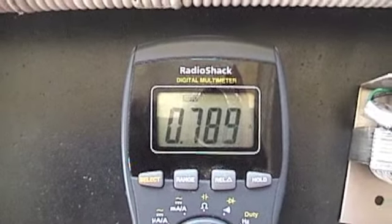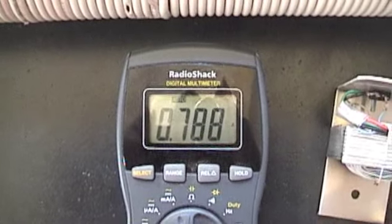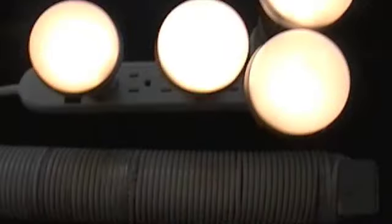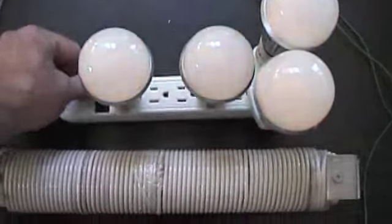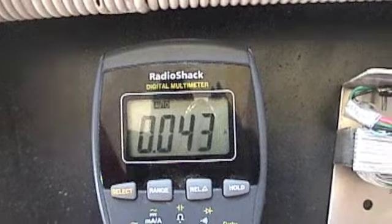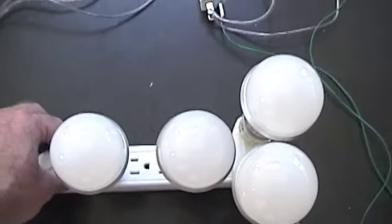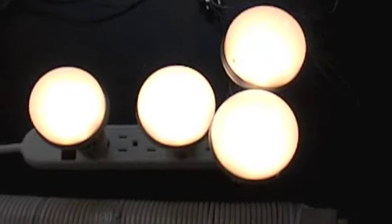So we're pulling 790 or so milliamps with the four bulbs. Another neat thing is with this system you can just shut them off. The milliamp drops way down at idle. So you can kind of turn them on like regular bulbs.